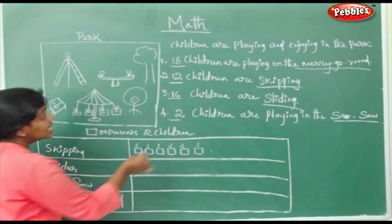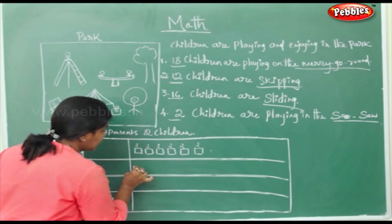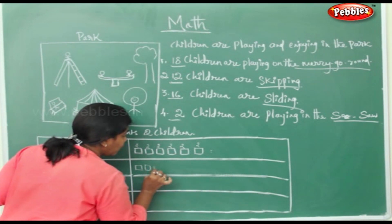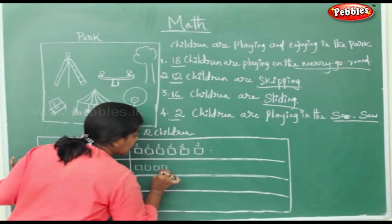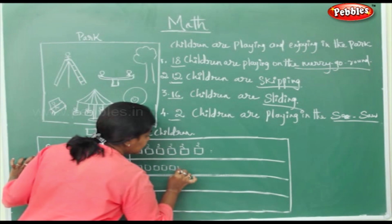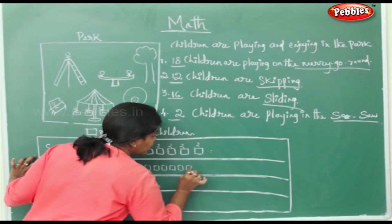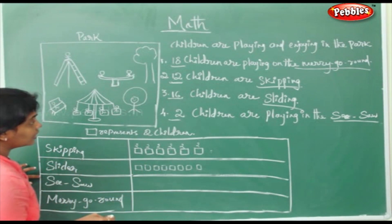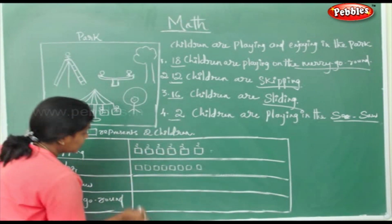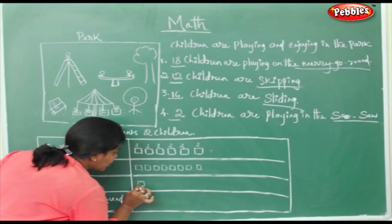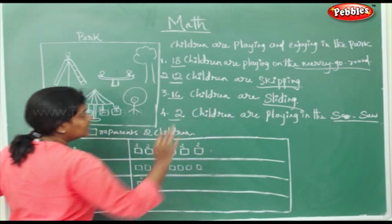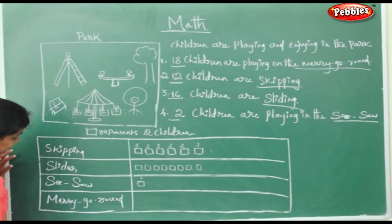Now slider — how many are sliding? 16 children are sliding. Each box represents 2 children: 2, 4, 6, 8, 10, 12, 14, 16 — that's 8 boxes. How many are on the seesaw? 2 children, so only 1 box. Why 1 box? Because each box represents 2 children and only 2 children are playing on the seesaw.